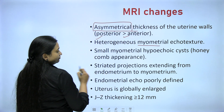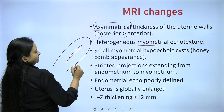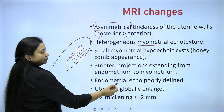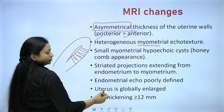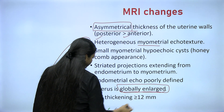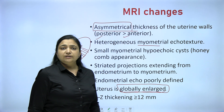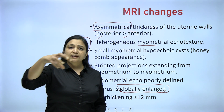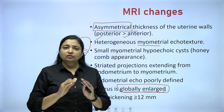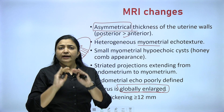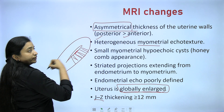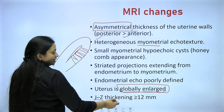MRI also shows striated projections extending from endometrium to myometrium — the venetian blind sign or fan-shaped infiltrations. The endometrial echo is poorly defined and the uterus is globally enlarged. This global enlargement is very important even on clinical examination, because in fibroids the uterus is irregularly enlarged — enlargement only where the fibroid is. But in adenomyosis, it is a globular enlargement.